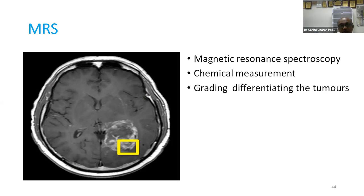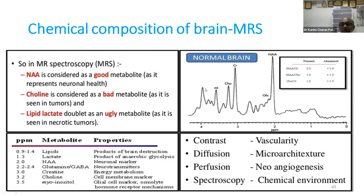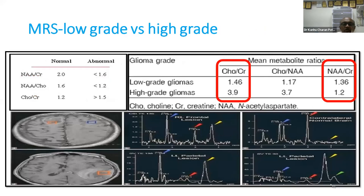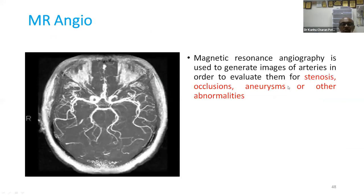MRS measures the chemical nature of the brain to grade and differentiate tumors. Key metabolites are choline, creatinine, and NAA (N-acetyl aspartate — a marker of neuronal activity). NAA is a good metabolite; choline is a bad metabolite that increases in malignant lesions. Lipid-lactate increases in necrosis and lymphoma. Choline-to-creatinine ratio below 2 indicates low-grade glioma; above 2 indicates high-grade glioma. For MR angio, use it to study stenosis, occlusion, aneurysms, and vascular abnormalities.